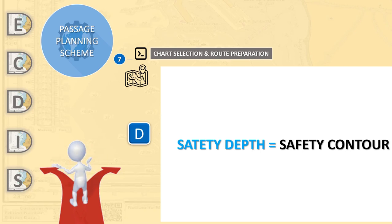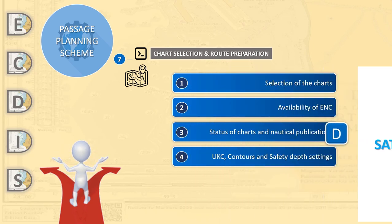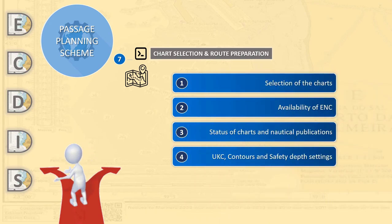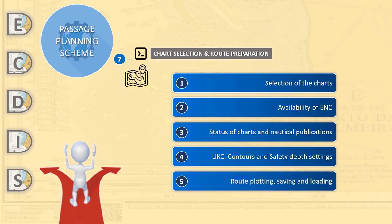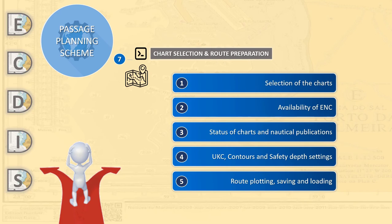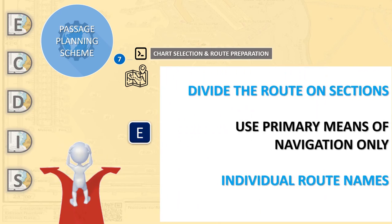For the creation of the track, the whole passage can be divided into three sections: from the berth at the departure port to the pilot station, from the pilot station to the pilot station at the arrival port, and from the pilot station to the arrival berth. This method makes it easier to alter a particular section if necessary. Later on, the three fragments can be merged into one route.